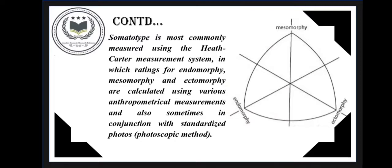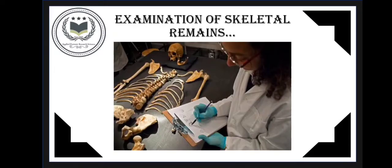The somatotype is defined as the quantification of the present shape and composition of a human body. It is expressed in three number ratings representing endomorphic, mesomorphic, and ectomorphic components respectively. The basic measurement system used is the Heath-Carter measurement system, calculated using various anthropometrical measurements and sometimes in conjunction with standardized photoscopic methods. The image shows examination of skeletal remains in which somatotype is being calculated.